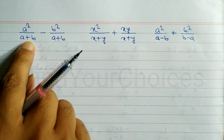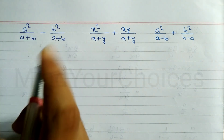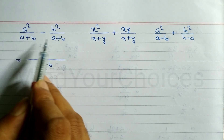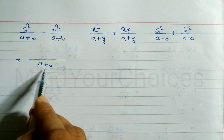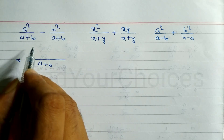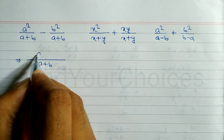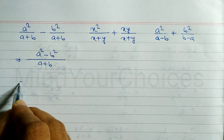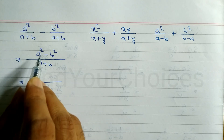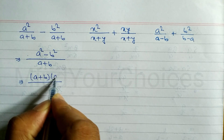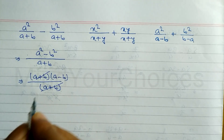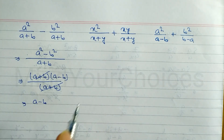In the first question, the denominator is the same: (a+b), (a+b), (a+b). Since the denominators are the same, it's easy to take the LCM — the LCM is (a+b). We just write the numerator: a² minus b². Now we use the formula a²-b² = (a+b)(a-b). In the denominator we have (a+b), so (a+b) cancels, and the remaining answer is (a-b).